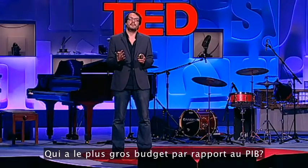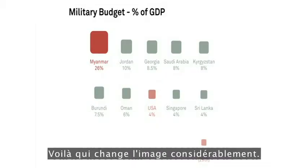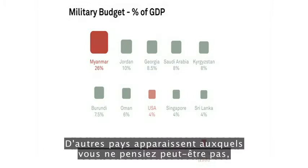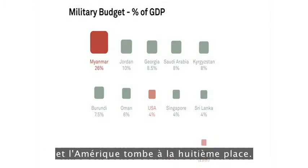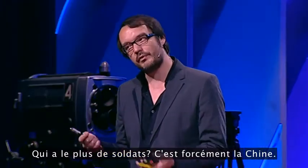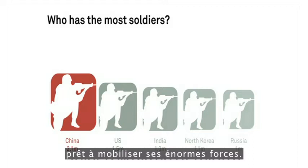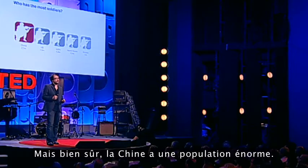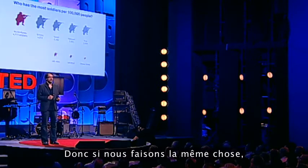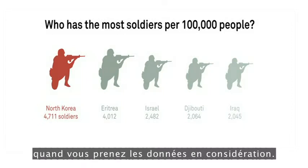Who has the biggest budget as a proportion of GDP? That changes the picture considerably. Other countries pop into view that you perhaps weren't considering, and America drops into eighth. And you can also do this with soldiers — who has the most soldiers? It's got to be China, 2.1 million. But of course, China has an enormous population. So if we do the same, we see a radically different picture — China drops to 124th. It actually has a tiny army when you take other data into consideration.